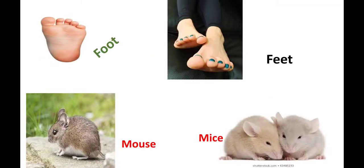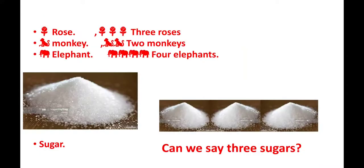Some words do not have the same rule. See: foot — if it is one, foot; if there are two, shall we say foots? No. The plural form of foot is feet. Here you see mouse — what is the plural form of mouse? Not mouses — mice. Some are different. One rose, three roses. Monkey — monkeys. Elephant — elephants. It is common. Many of the plural forms can be formed by simply adding S.